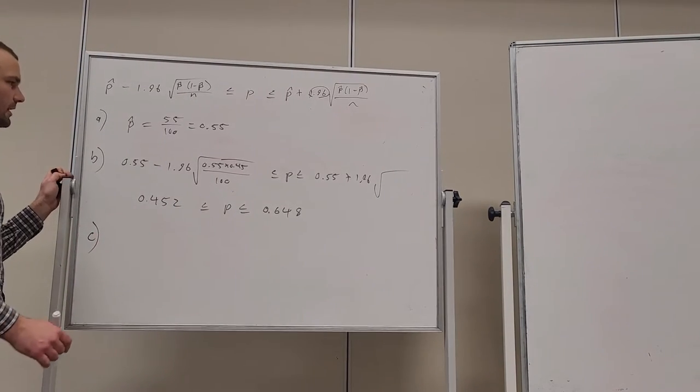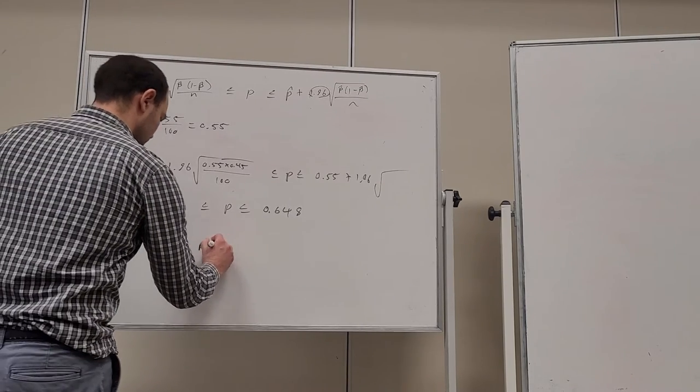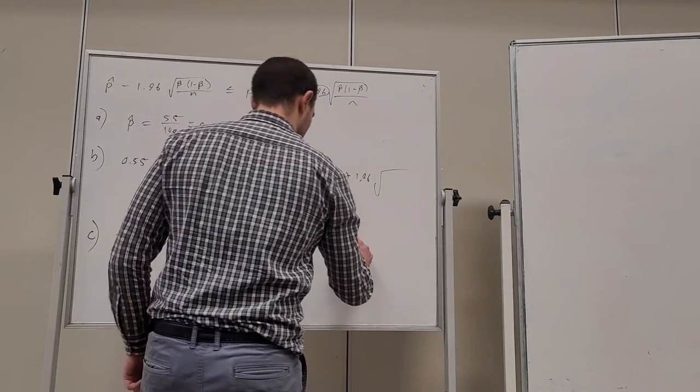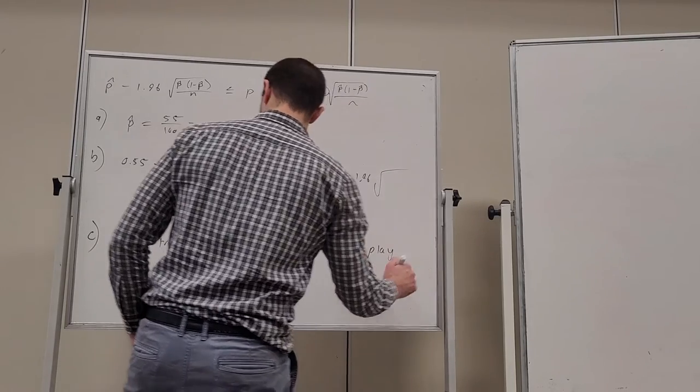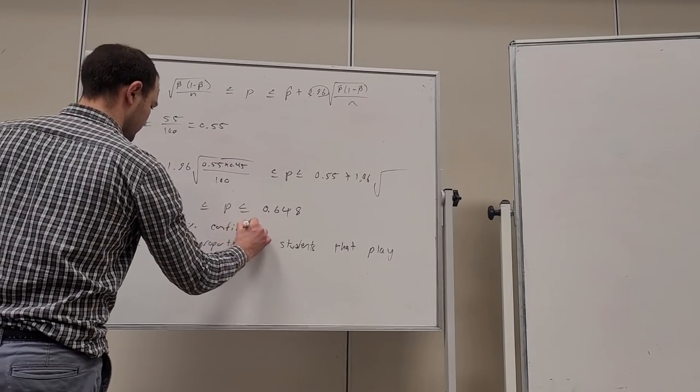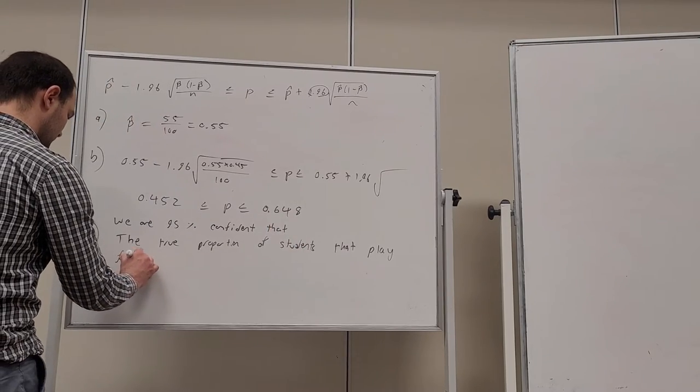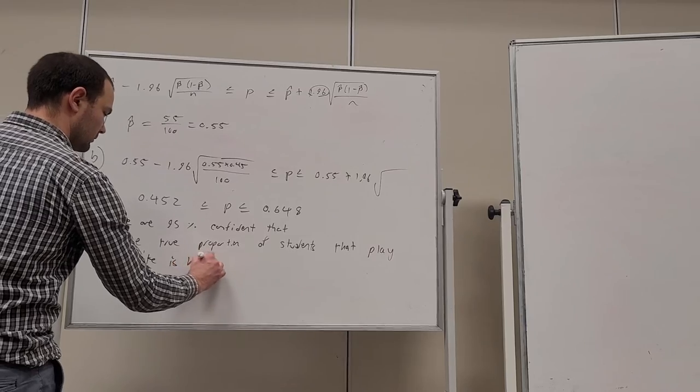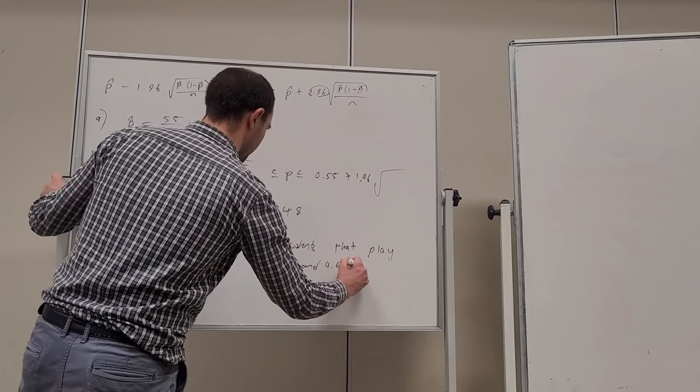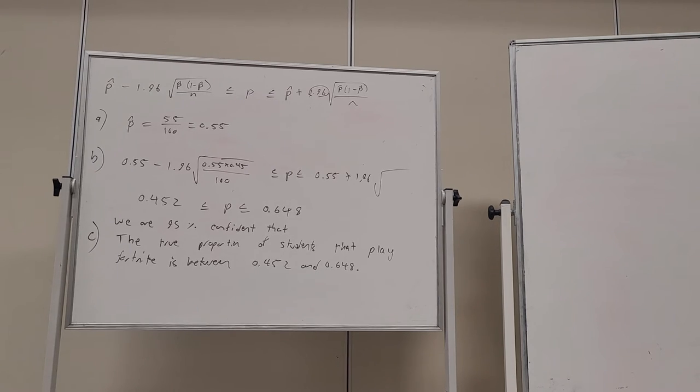Part C. What does it say? Interpret your answer. So, the true proportion of students that play Fortnite is going to be 0.452 and 0.648. So it's just about judging a client.